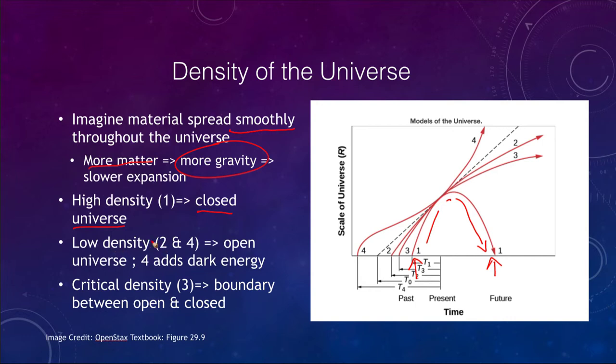A low density universe, which is lines two and four in the graph, means it's open and it continues to expand forever. Here you have the open universe without using dark energy. It just continues to expand, the universe will get larger and larger, but it is expanding at a decreasing rate, not accelerating.